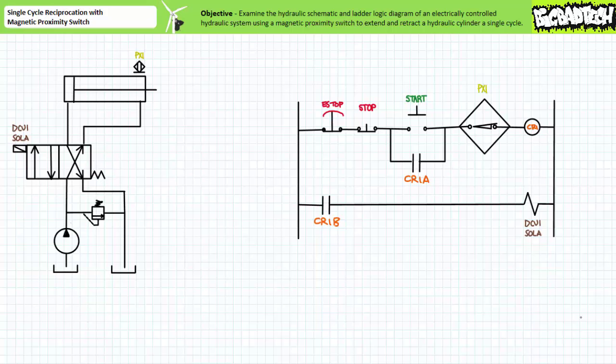What could go wrong with this system? How could it break? How could you identify potential problems? The most important step in troubleshooting a malfunctioning system is to understand how the system is intended to work — that's what we just did. You simply cannot perform troubleshooting without performing this step. Since this system is only a subtly modified version of the single cycle reciprocation with limit switch circuit examined in the previous lecture, all of those previous troubleshooting scenarios are equally valid. Let's examine a couple more additional scenarios common to both systems or particular to this circuit with magnetic proximity switch.